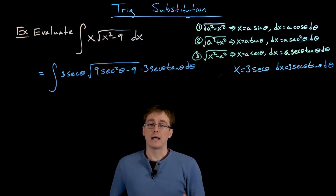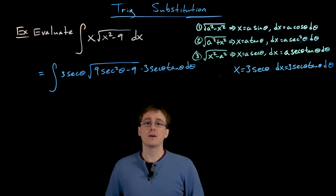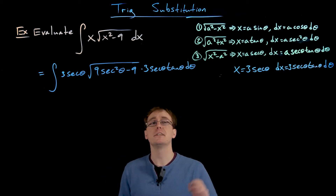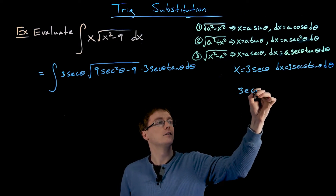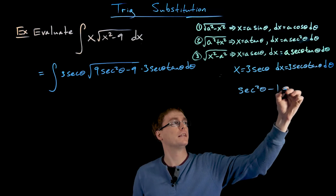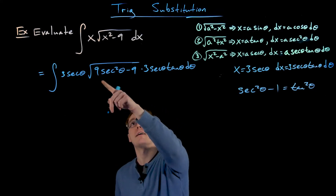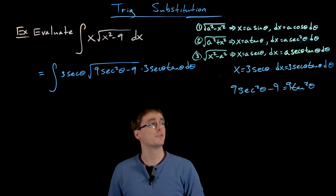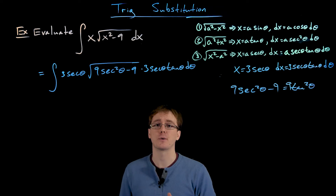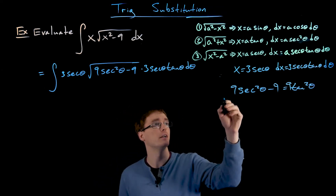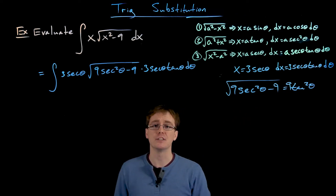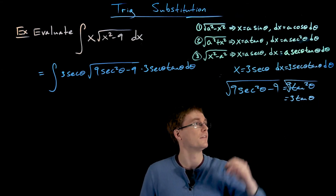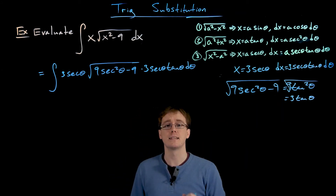To simplify the square root, we use the Pythagorean identity: secant squared of theta minus 1 equals tangent squared of theta. Multiplying through by 9 gives 9 secant squared of theta minus 9 equals 9 tangent squared of theta. Taking the square root eliminates the radical — the square root of 9 tangent squared of theta simplifies to 3 times tangent of theta.